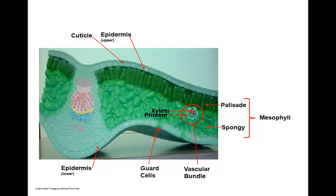Here we see a model of the leaf. Areas of interest associated with this plant organ include the thick cuticle, which prevents water loss. The epidermis, along with the cuticle — both upper and lower — make up the dermal plant tissue. Guard cells are specialized epidermal cells which surround a plant pore called a stoma, through which carbon dioxide and oxygen gases diffuse.